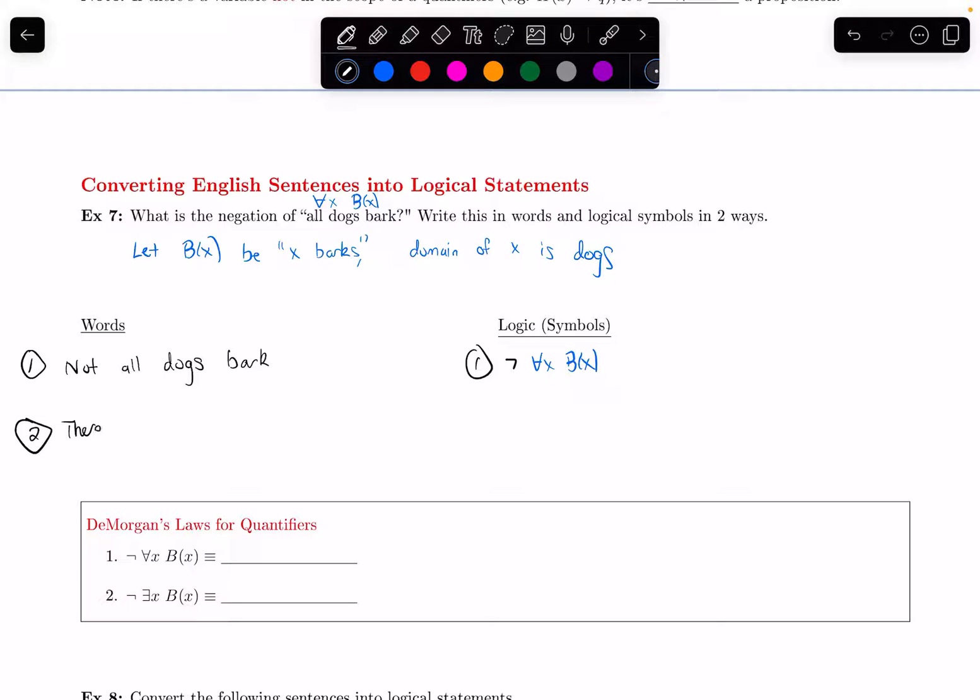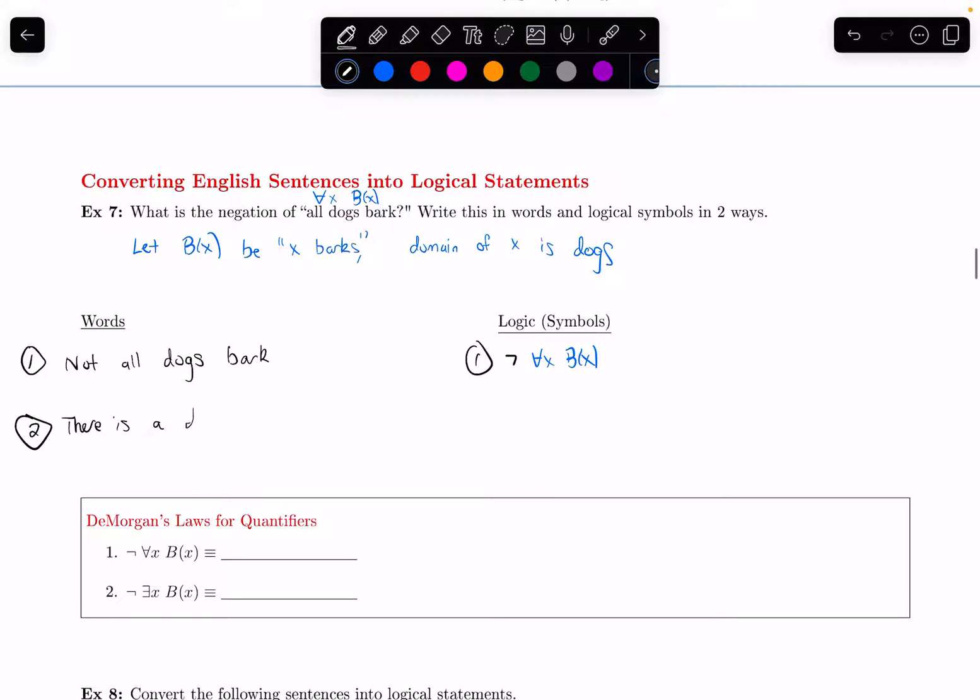That's the same thing as saying that there is a dog, there is some dog who doesn't bark. And when I say the word a here, I mean there's at least one, at least one dog who doesn't bark. And when I see the word there is, that reminds me of my there exists quantifier. So I can express this as there exists a dog X. And then I need something to represent, well, the dog doesn't bark. But doesn't bark would be the negation of B of X.